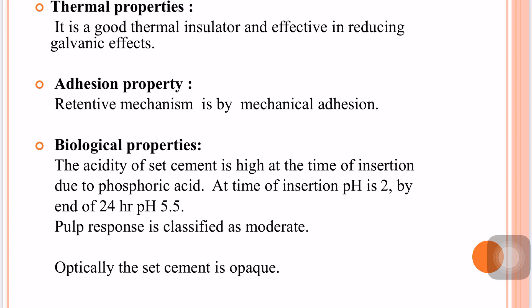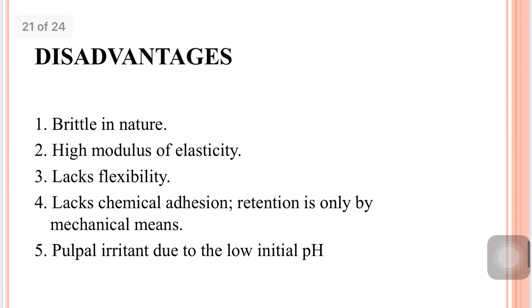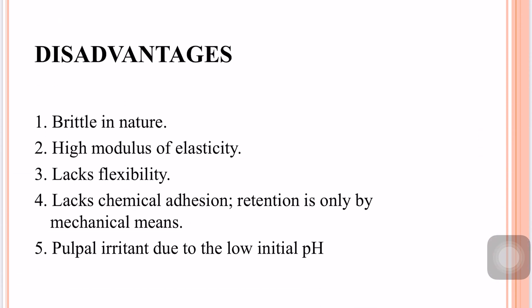Optically, the set cement is opaque. The main advantages are: high compressive strength, good thermal and electrical insulation, and relatively low solubility. The disadvantages are: low tensile strength making it brittle, high modulus of elasticity making it stiffer, lack of flexibility, lack of chemical adhesion, pulpal irritation, and absence of anti-cariogenic properties.